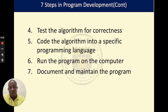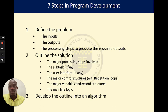After outlining your algorithm, there are some other tests you need to do to ensure the algorithm is correct. Then we program our algorithm into a specific programming language, run it on our computer, and document and maintain the program afterwards. For this section of our studies, we will focus on the first three steps: defining the problem, outlining a solution, and developing the outline into an algorithm.